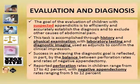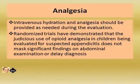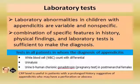The evaluation and diagnosis in children with suspected appendicitis relies on history, physical examination, laboratory testing, and diagnostic imaging. The balance between success and failure depends on how early we operate to prevent perforation and how we can prevent unnecessary appendectomy. One important step in management is analgesia. Intravenous hydration and analgesia should be provided as needed during evaluation. Randomized trials have demonstrated that judicious use of opiate analgesia in children being evaluated for suspected appendicitis does not mask significant findings on abdominal examination or delay diagnosis. Laboratory abnormalities in children with appendicitis are variable and non-specific, and a combination of history, physical examination, and laboratory tests is sufficient to make the diagnosis.